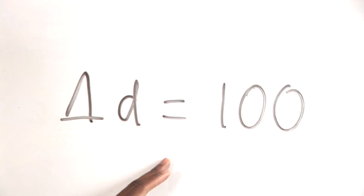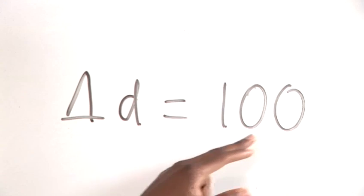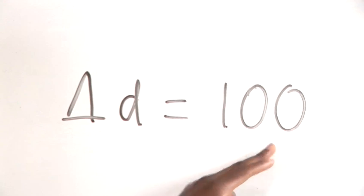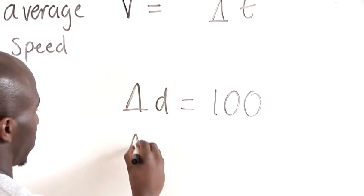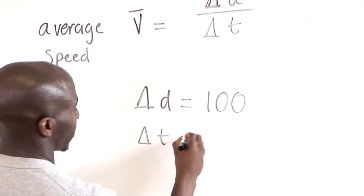So delta D is a hundred meters. And if we look at the time that this distance is ran within, we can say a plausible time would be ten seconds.